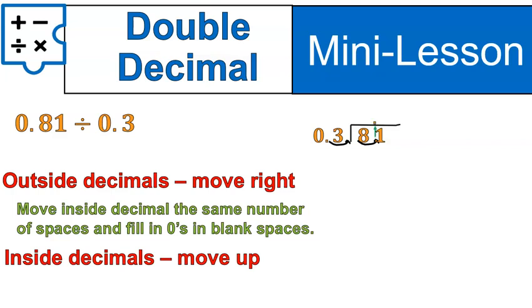Then, the decimal inside will then move up. See how that worked? Now, we're going to pretend none of those decimals exist, and we're going to just do 81 divided by 3. Let's do it. How many groups of 3 are there inside of 8? Two. Two times 3 is 6. We subtract. Now, we'll bring that 1 down. How many groups of 3 inside of 21? Seven. Seven times 3 is 21. We subtract and we get 0.